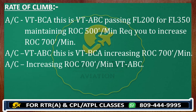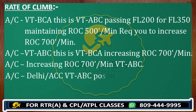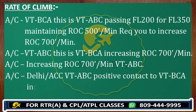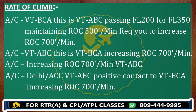Now you inform Delhi Control again: Delhi Control, Victor Tango Alpha Bravo Charlie, positive contact with Victor Tango Bravo Charlie Alpha, increasing rate of climb 700 feet per minute. This completes scenario number one.